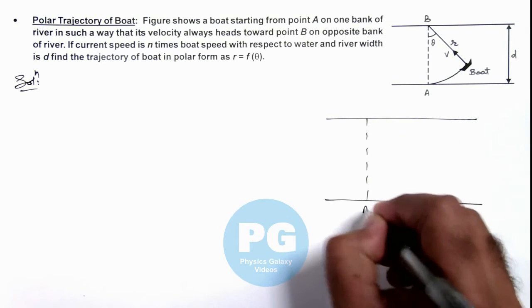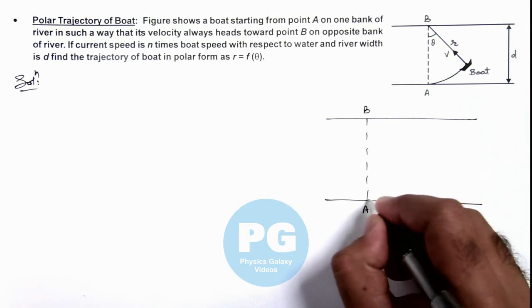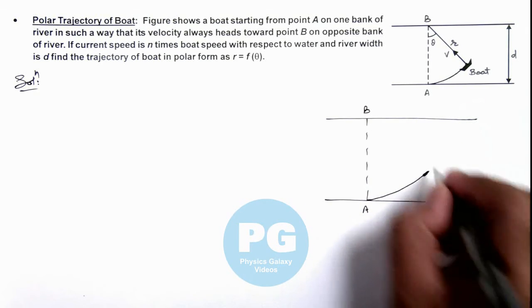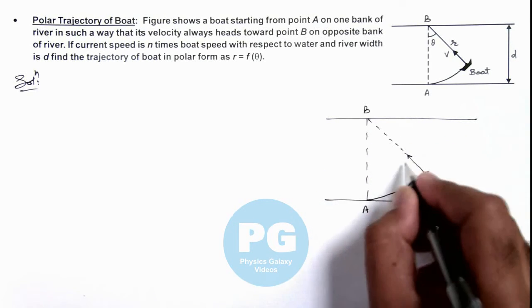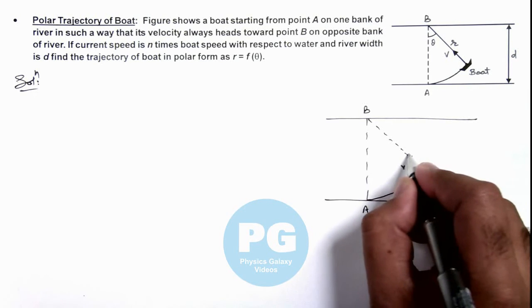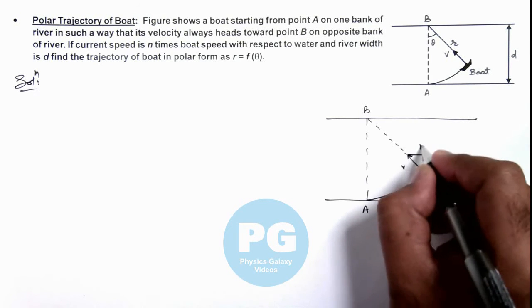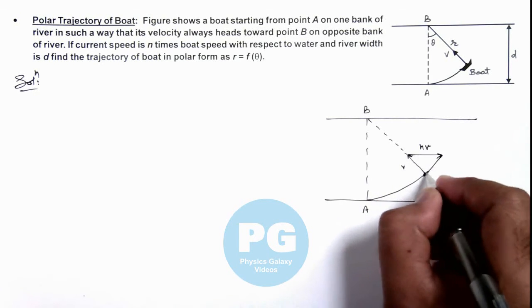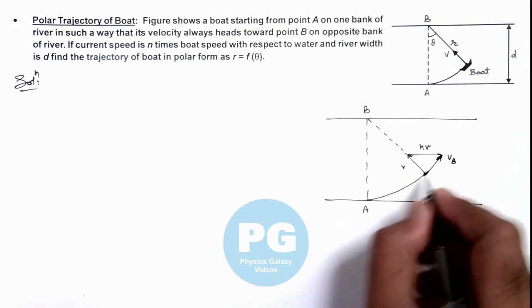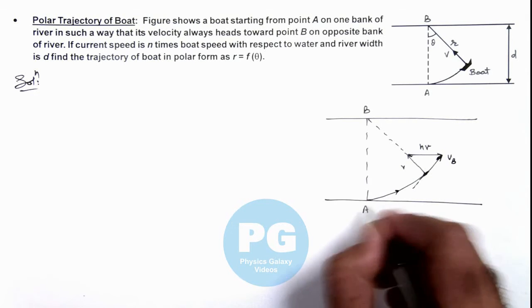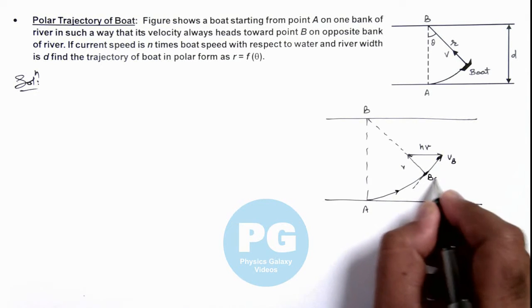Say if these two points are A and B and the boat is moving in such a way that its velocity v is always heading toward point B. In this velocity, the current velocity is added which is nv, that will give a velocity of boat with respect to ground which is along the tangential direction of the trajectory in which the boat is moving. This is the position of the boat.